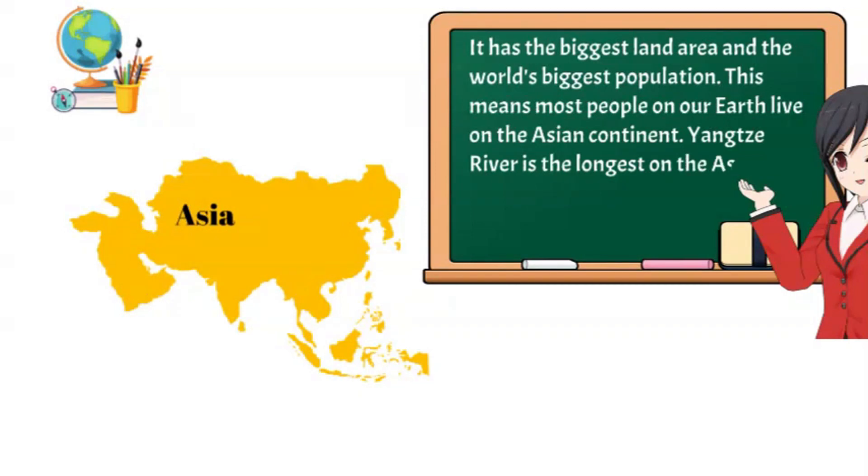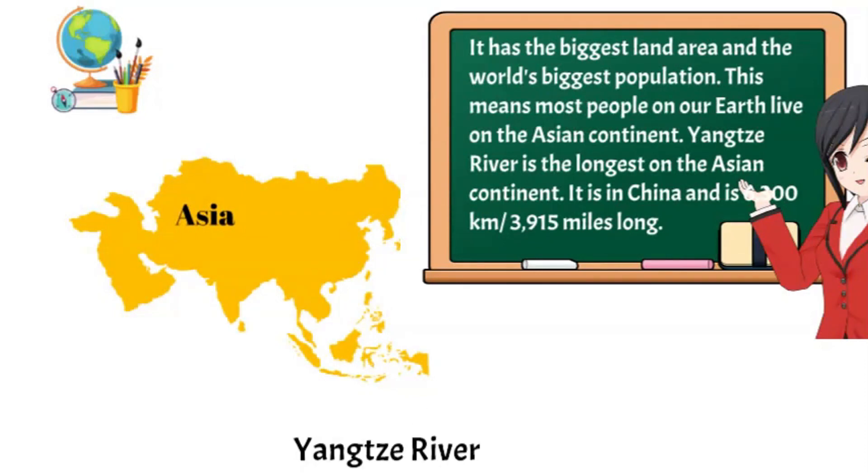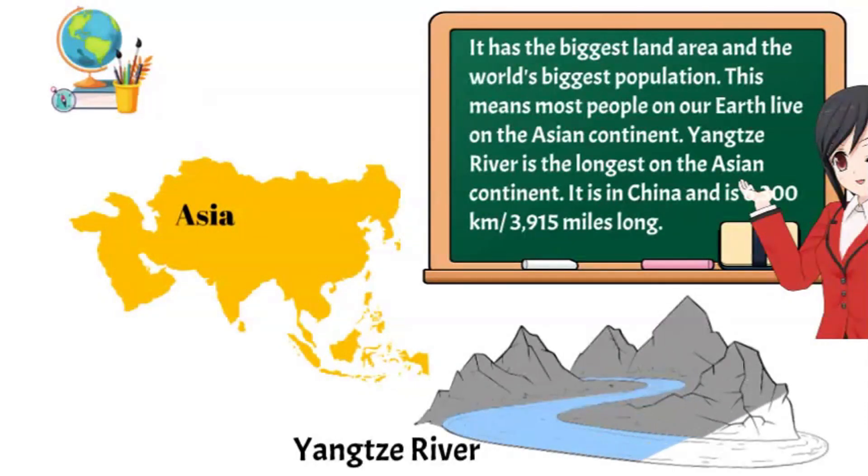Yangtze River is the longest on the Asian continent. It is in China and is 6,300 kilometers long. The Yangtze is the third longest river in the world after the Amazon and the Nile.